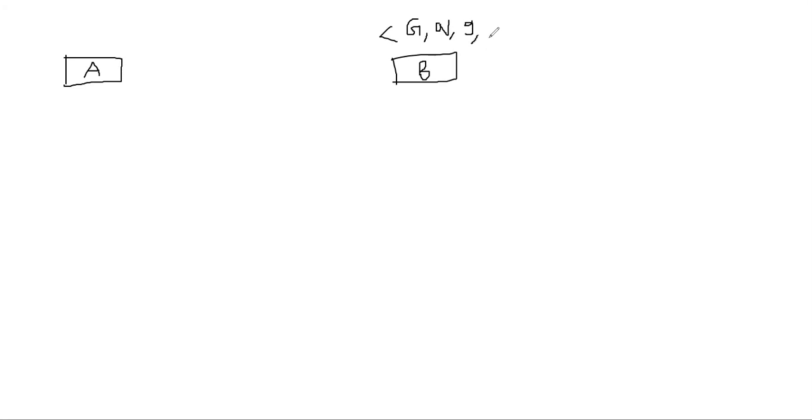And we need a public key H and the private key X. So I will only write the public parameters here. He randomly picks an X from ZQ.